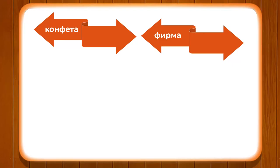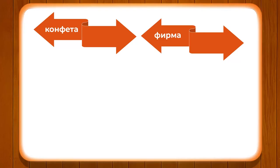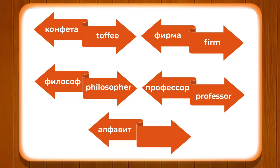Now we have certain other words. Let's pay attention to the position of udharenie on certain vowels — the stress sign falls on a vowel, making that vowel's sound higher. KONFETA means toffee, FIRMA means firm, FILOSOF means philosopher, PROFESSOR means professor, and ALFAVIT means alphabet.